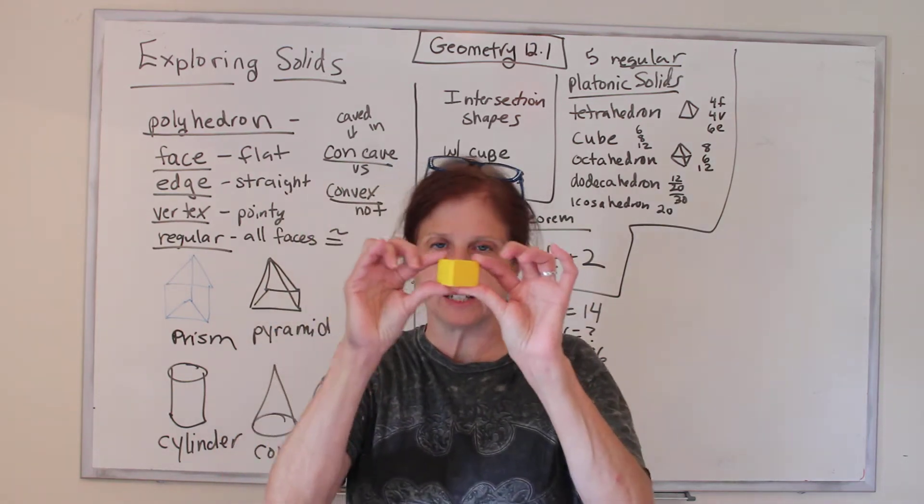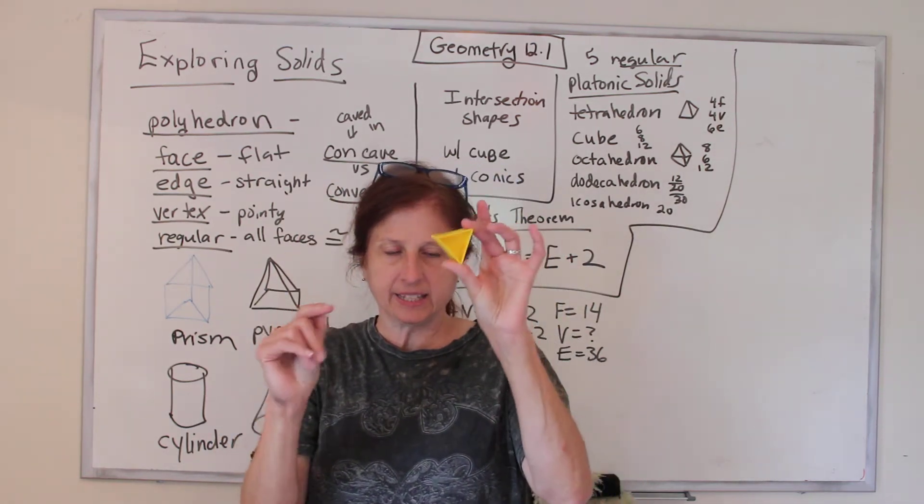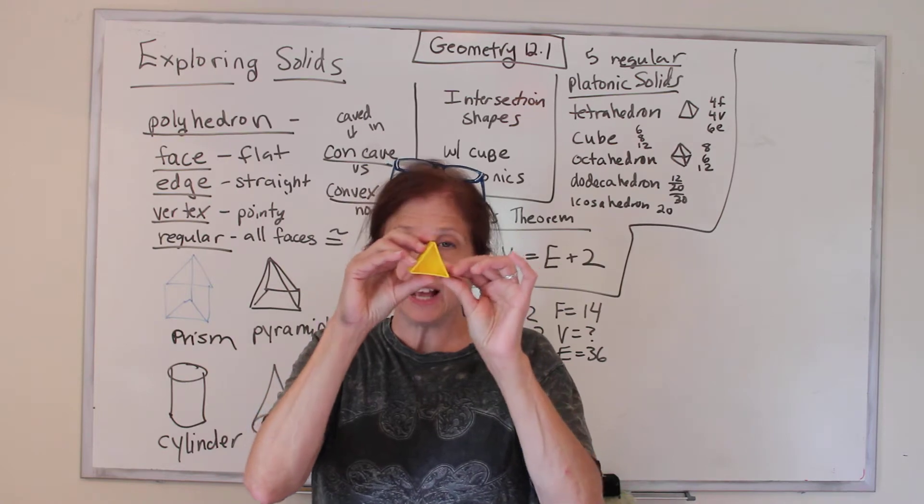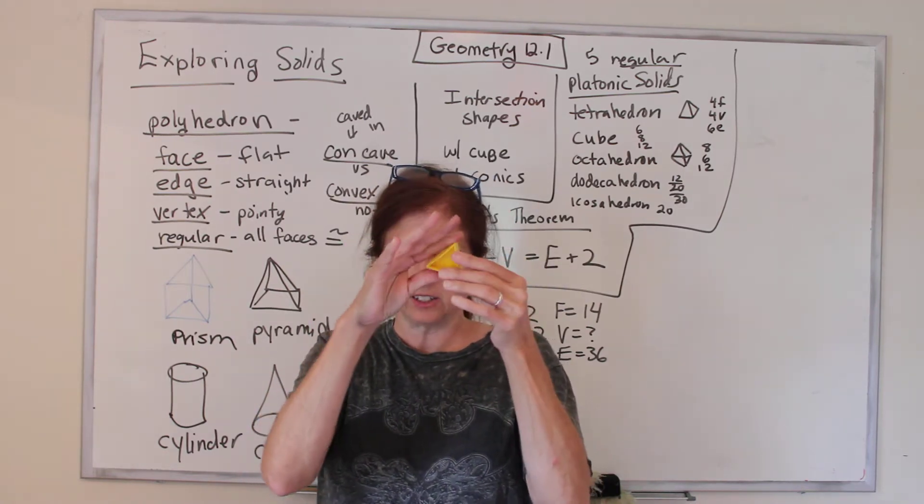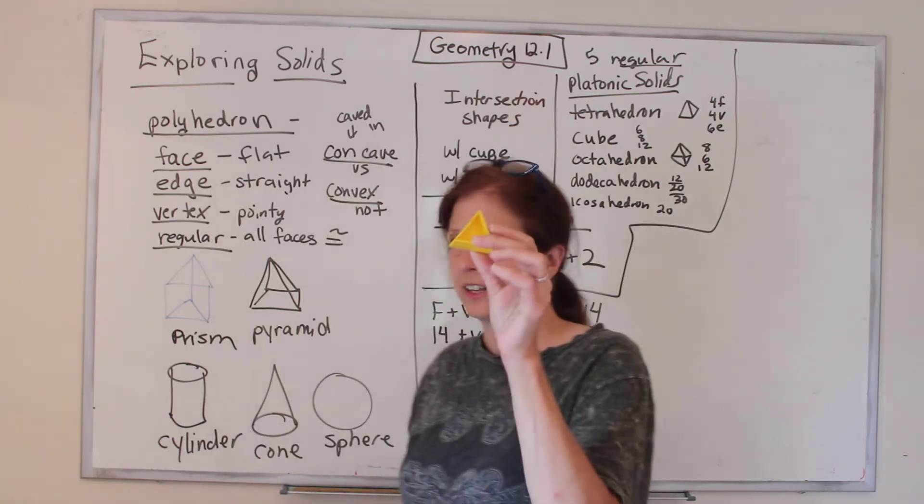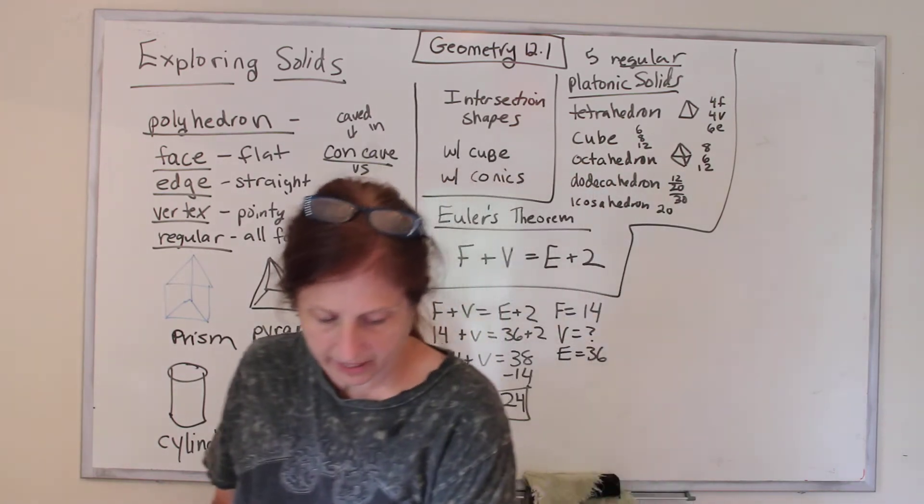Okay, so our first shape is a prism. And is it a polyhedron? Yes, because they're all flat. Everything is flat. Nothing is curved. Nothing is round. So yes, that is a polyhedron.